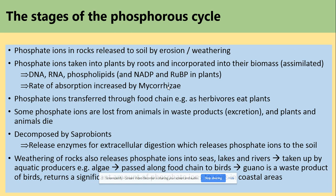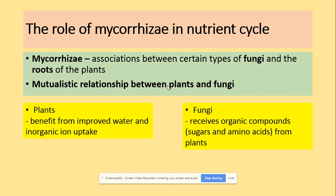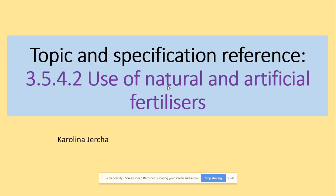To summarize the role of mycorrhiza in the nutrient cycle: it is the association between certain types of fungi and the roots of plants. It's a mutualistic relationship where the plants receive water and inorganic ions, and the fungi receive organic compounds such as sugars and amino acids from the plants.